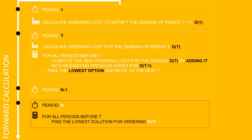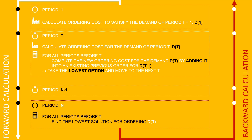Then you start the backward calculation. For all periods before t, you find the lowest solution, driving it from n to 1. The idea is to find the cheapest path from n to 1 that will optimize the total cost per setup.